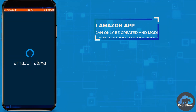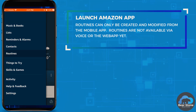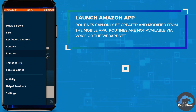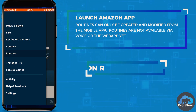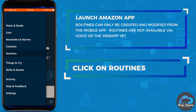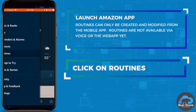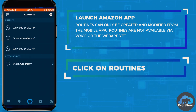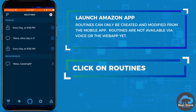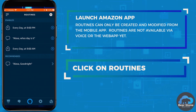From our phone we're going to launch our Amazon app — this is where we're going to set up our routines. I have these two routines set up. I'm going to show them to you. I have one at 9 a.m. and one at 9 p.m.